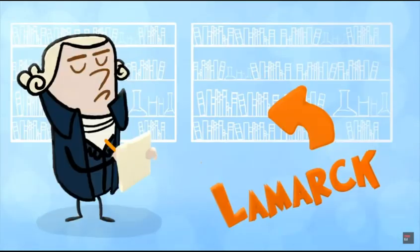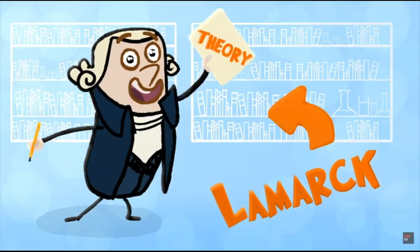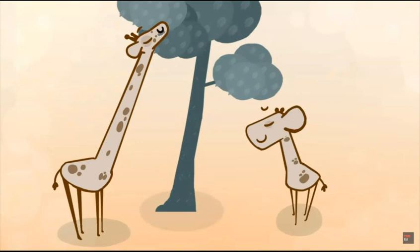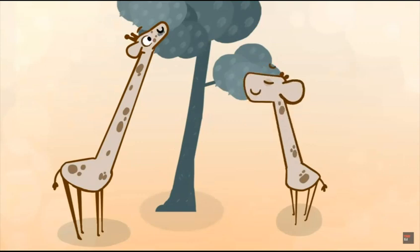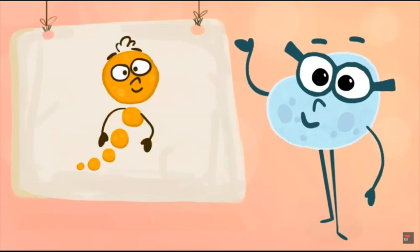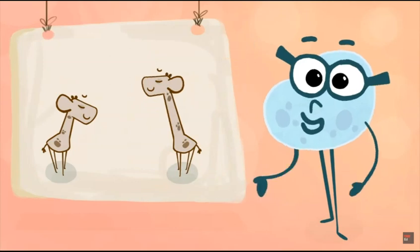Almost 60 years before Darwin published his book, Jean-Baptiste Lamarck proposed that creatures evolve by developing certain traits over their lifetimes and then passing those on to their offspring. For example, he thought that because giraffes spent their lives stretching to reach leaves on higher branches, their children would be born with longer necks. But we know now that's not how genetic inheritance works. Individual organisms don't evolve at all. Instead, random genetic mutations cause some giraffes to be born with longer necks, giving them a better chance to survive.